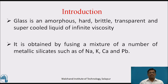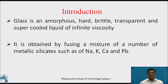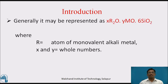Introduction. Glass is an amorphous, hard, brittle, transparent and supercooled liquid of infinite viscosity. It is obtained by fusing a mixture of a number of metallic silicates such as of sodium, potassium, calcium and lead, etc. Generally, it may be represented as XR2, YMO and 6SiO2, where R stands for atom of monovalent alkali metal like sodium, potassium, etc., and X and Y are whole numbers.